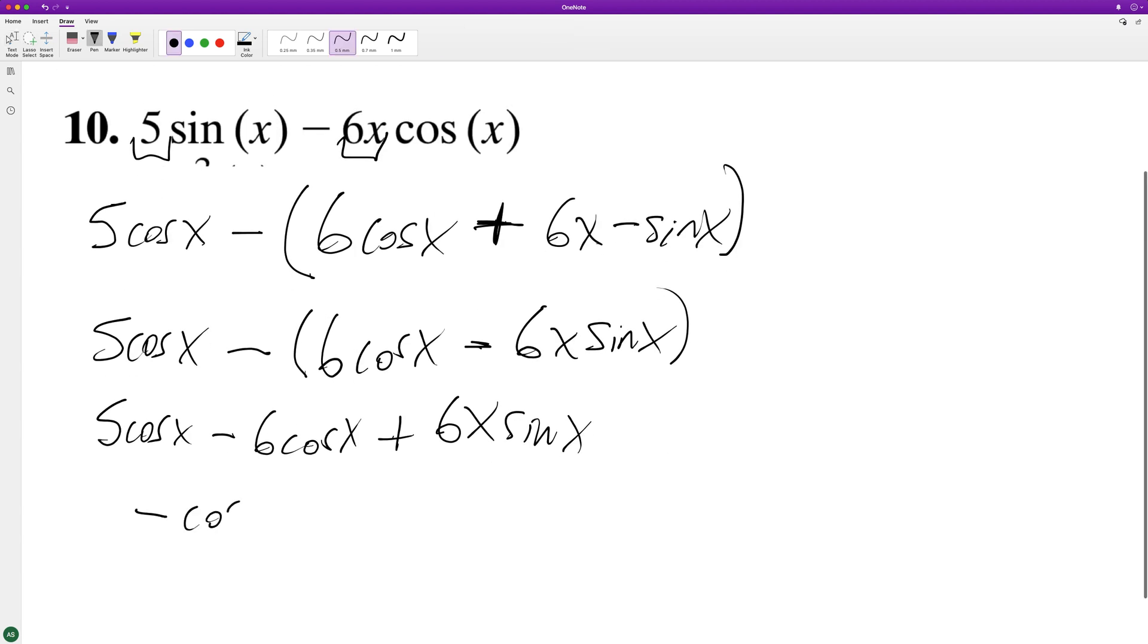So negative cosine of x, because 5 minus 6. And we can just rewrite it with a positive term first: 6x sine of x minus cosine of x. And that's it.